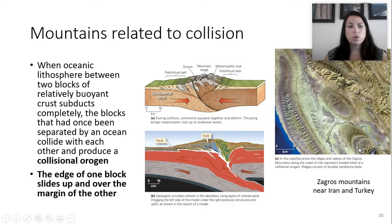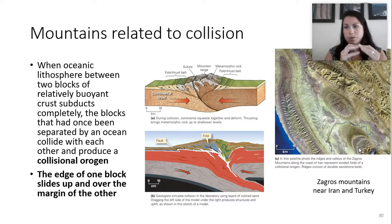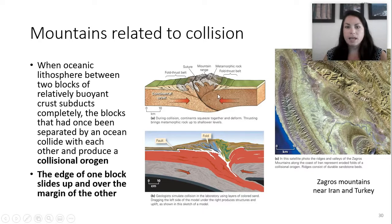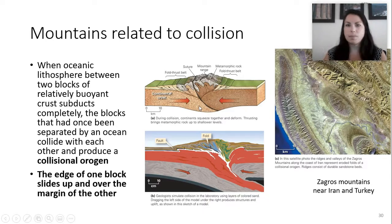What about collision? When oceanic lithosphere between two blocks of relatively buoyant crust subducts completely, the blocks that were once separated by an ocean collide with each other. This is called a collisional origin, and the edge of one block slides up over the margin of the other. As these two converge, it shortens the block on top, which raises up and creates a mountain range. We see that today in the Zagros mountains near the border of Iran and Turkey - you can check this out on an aerial image. It's pretty cool and we see it happening today.